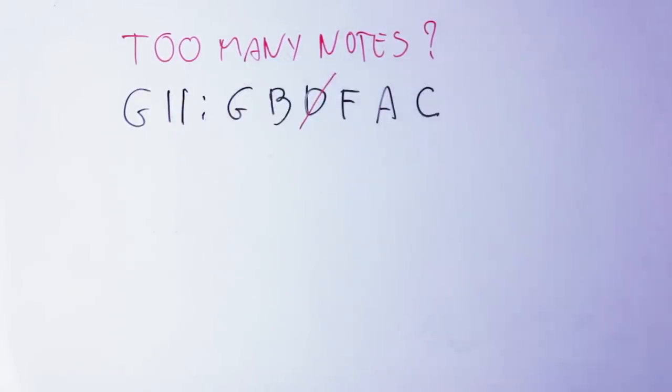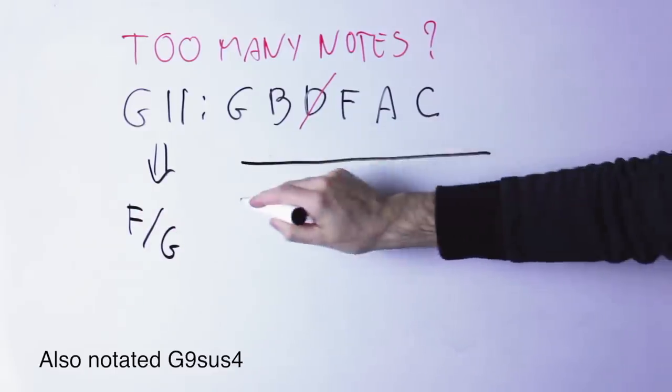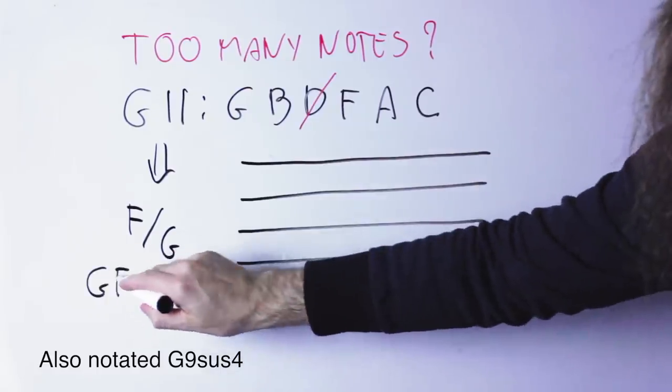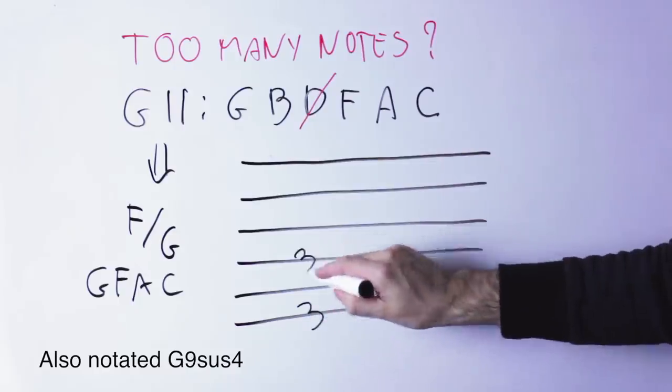Another example, G11. This is G, B, D, F, A, C, six notes. But when we play it on the guitar, it's actually usually played as F over G, meaning the F triad over the bass of G, or if you prefer G, F, A, C. In this case, I omit the third B and the fifth D, and that's how it sounds.